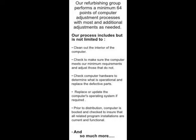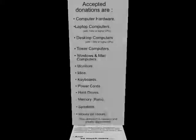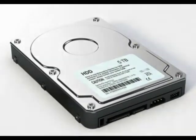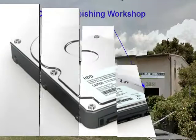Continuing down the page, you'll see our Refurbishing Group 64-point computer adjustment process that we provide. Further down, you'll see what type of donations we accept, and our erasing procedure. So if you give us a hard drive from your computer, never fear, because the first thing we do is erase the hard drive.